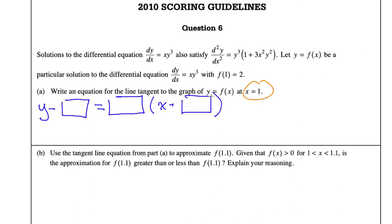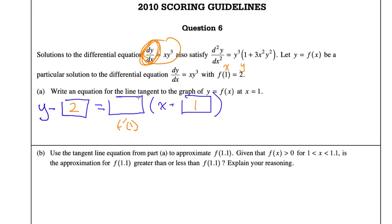x is equal to 1 — that's very clearly x equals 1. What is our y-coordinate? When I plug in x=1, the y-coordinate must be 2. It tells you right there, so 2. And then I need to find the derivative here. This is always f prime of whatever your x was — in this case, f prime of 1. I have dy/dx is equal to x times y cubed.